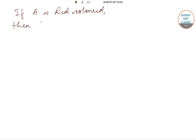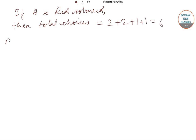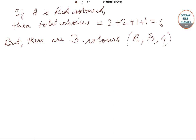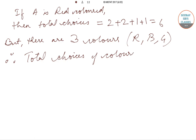So if A is red, the total choices equal 2 + 2 + 1 + 1 = 6. But there are three colors — red, blue, and green — so the total number of colorings will be 6 × 3 = 18. Therefore, option A is the correct answer.